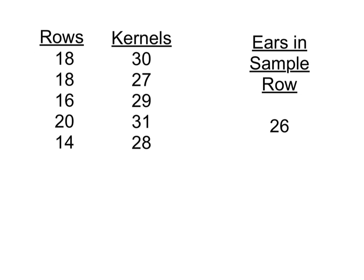After Pam made the counts of the number of rows around each of her sample ears and counted down a typical row of kernels for each of those ears, she built up a data table. This table shows the number of rows of corn around each of the five ears in her sample, and in this section she recorded the typical number of kernels in a particular row of that corn. There were 26 ears of corn in her sample row, which was 13 feet 1 inch long and represents one one-thousandth of an acre.